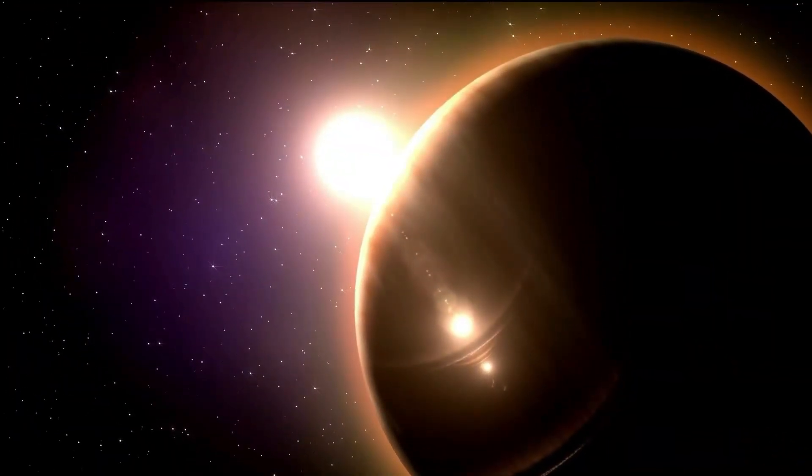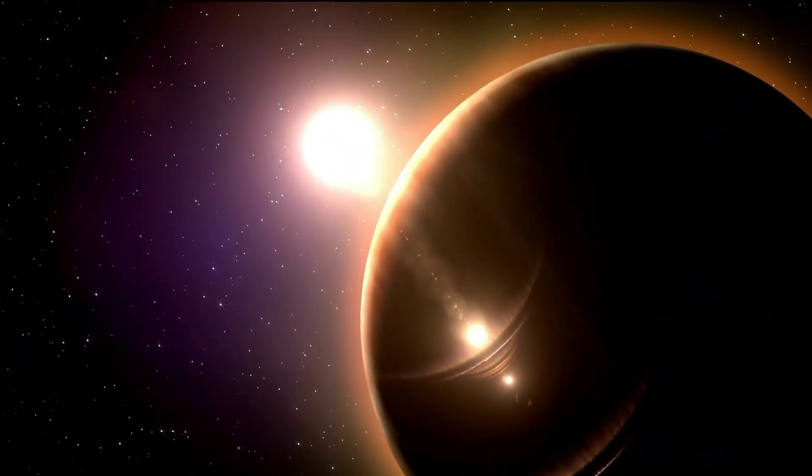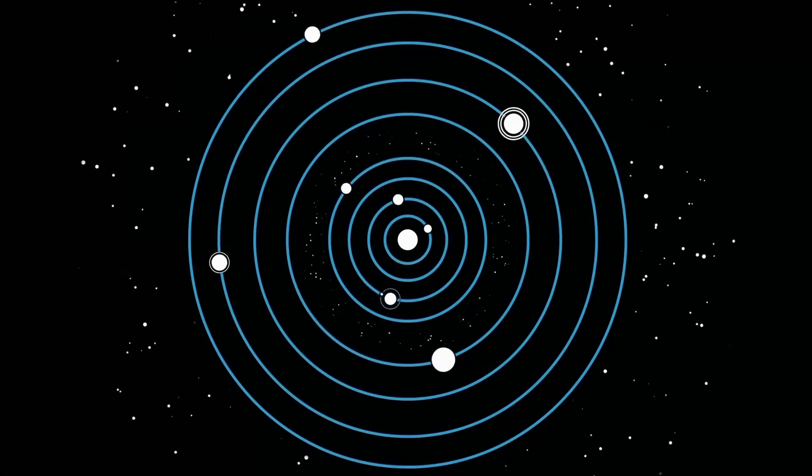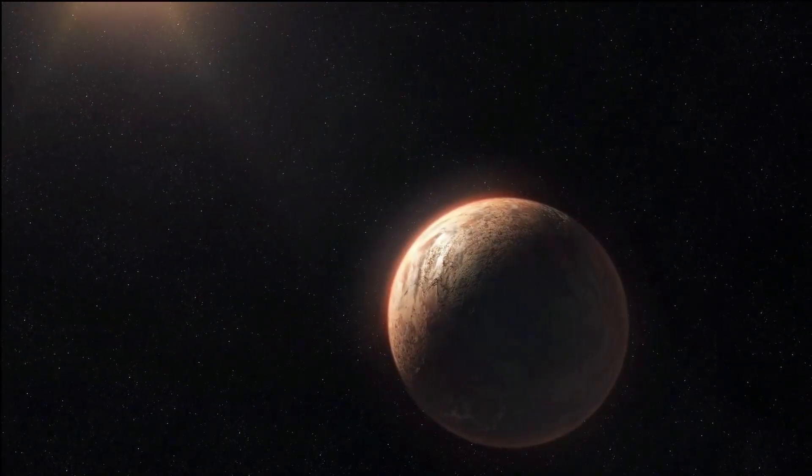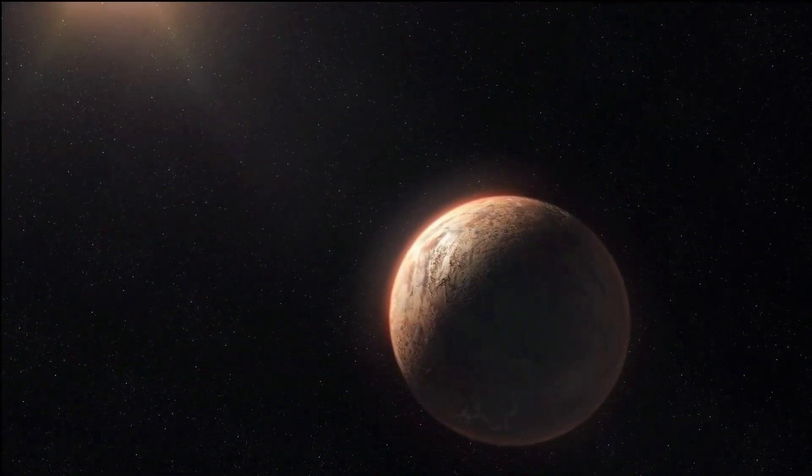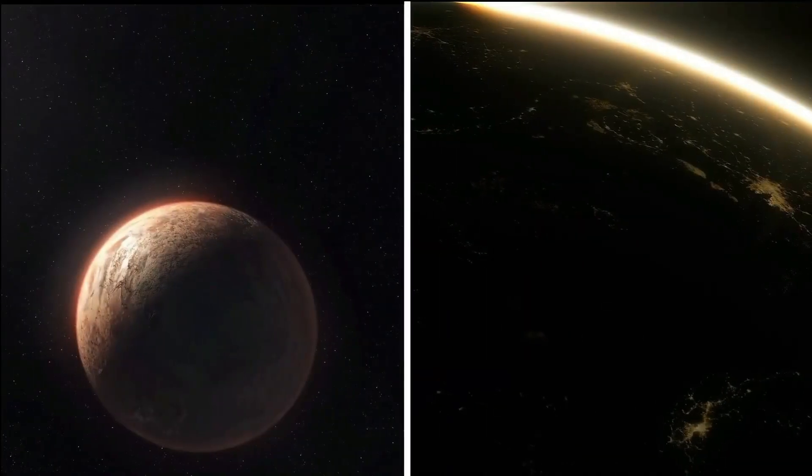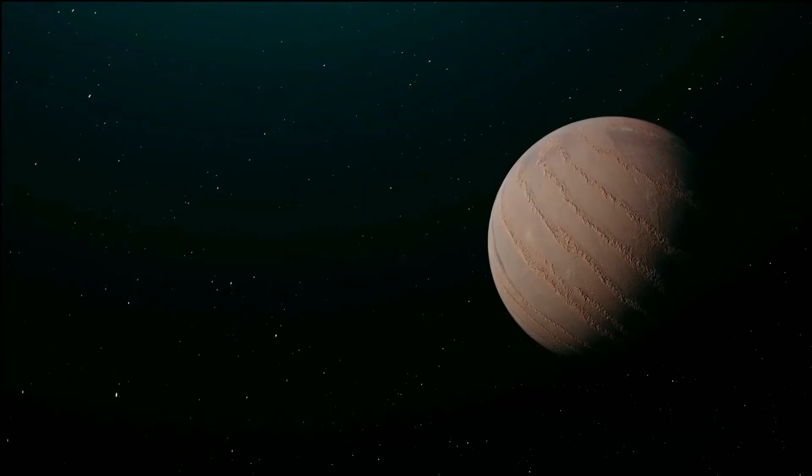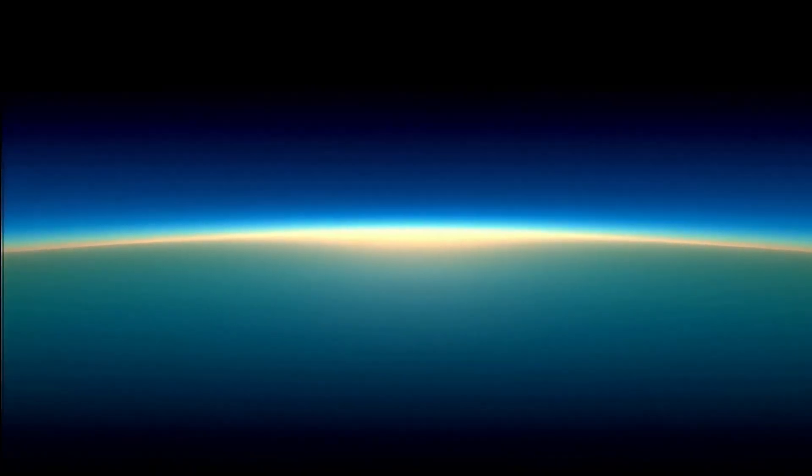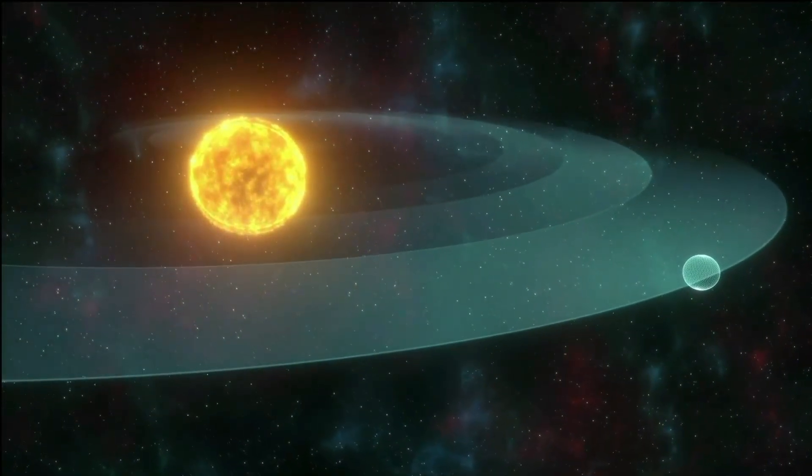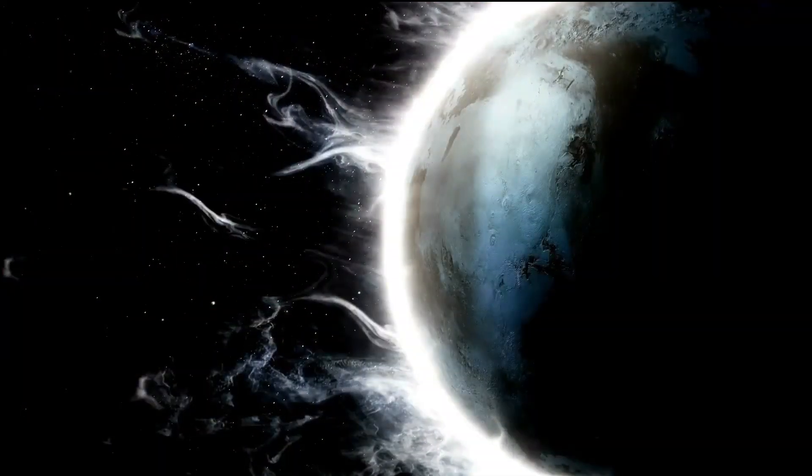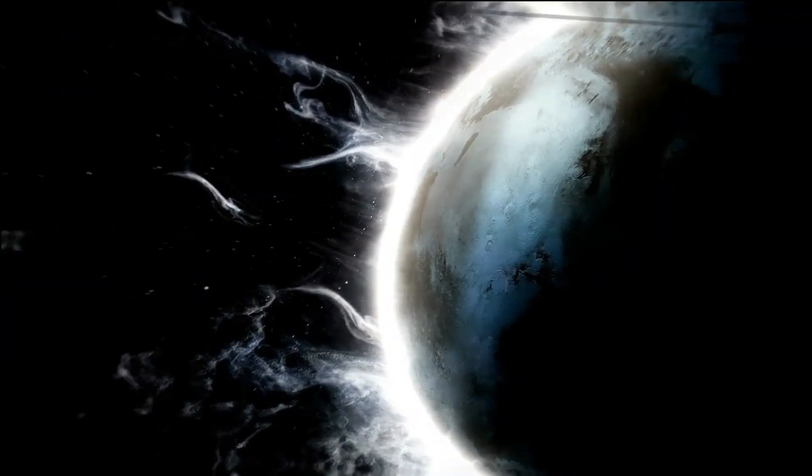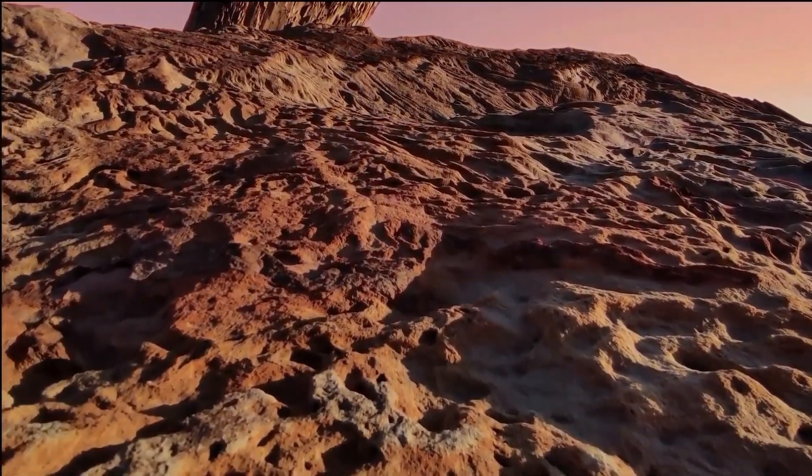But since Proxima b revolves around a star that is far smaller and less massive than the Sun, the researchers believe that it is tidally locked and rotating synchronously with its host star. This would mean that one side of the planet is constantly facing the star, while the other side always faces away from it, creating a light side and a dark side. Another mystery is Proxima b's atmosphere. The planet's orbit around its star, which takes only 11 Earth days to complete, is extremely close. This is why scientists think it's likely that Proxima Centauri's radiation has contaminated Proxima b's atmosphere, making it hard for the alien planet's surface to retain liquid water.